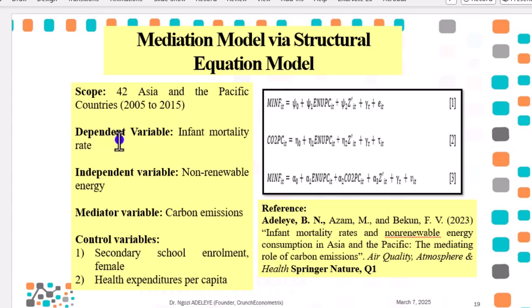Our dependent variable is infant mortality rates, independent variable is non-renewable energy, the mediator variable is carbon emissions, and we use two control variables, female secondary school enrollments and health expenditures per capita. And these are the three equations that were specified in the article. I already explained this equation in the part one of this video series.